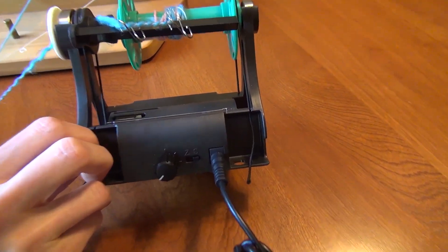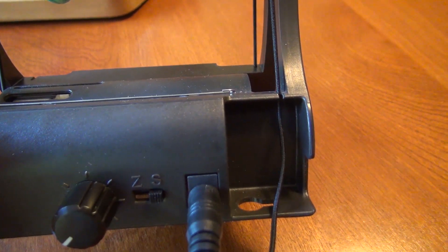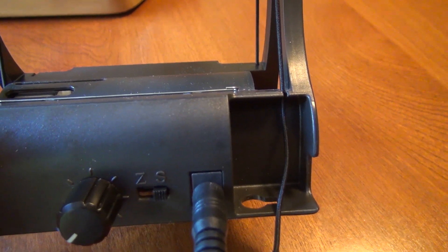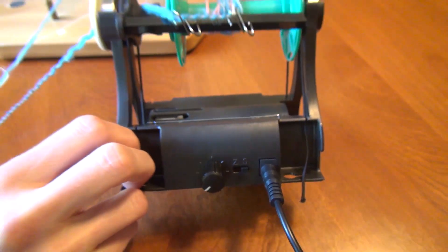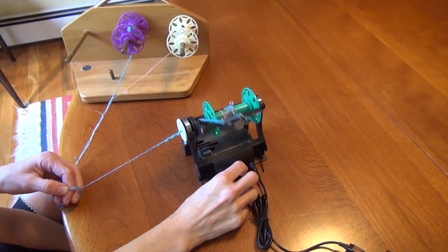After that you start spinning. Plying is actually a little easier because you don't have to worry about your yarn breaking as much as you do when you're making singles.